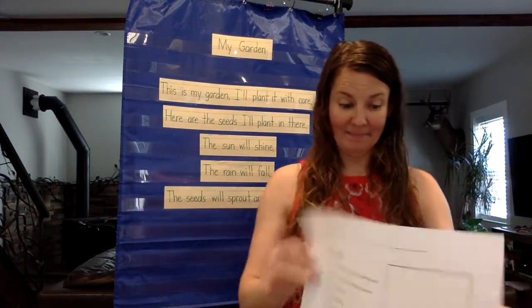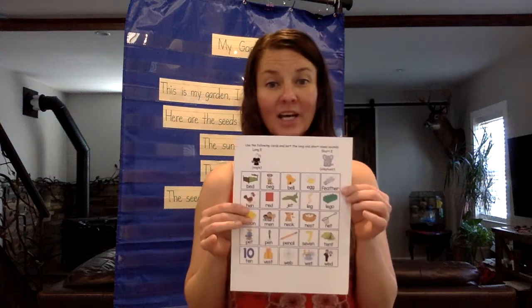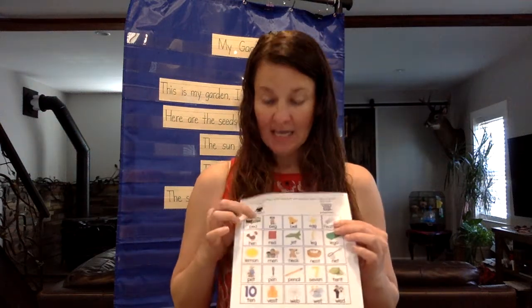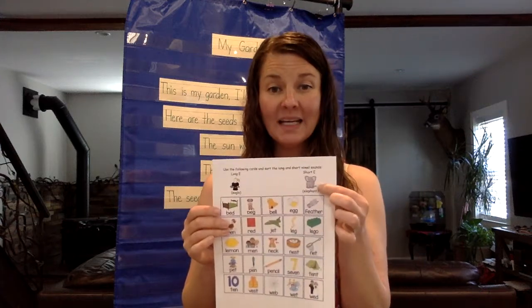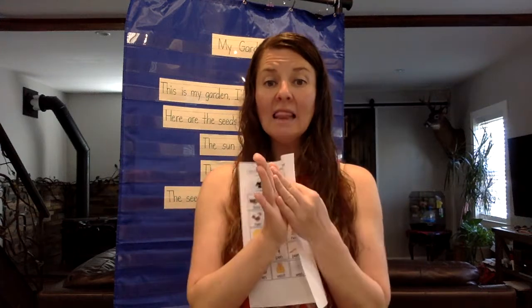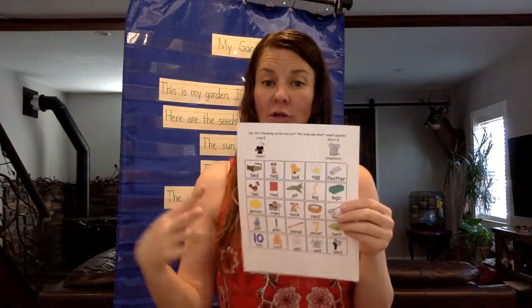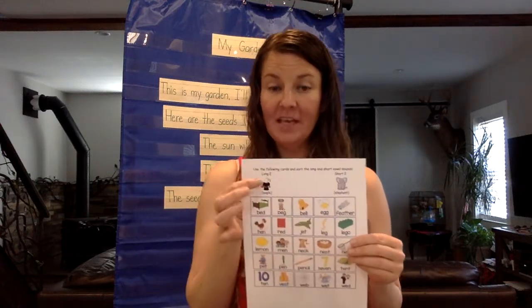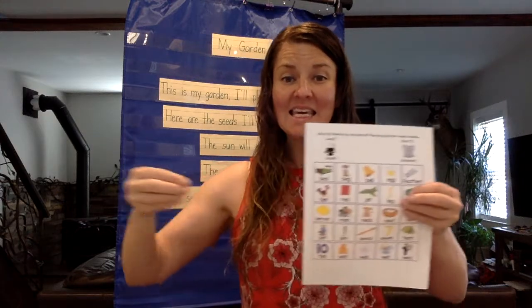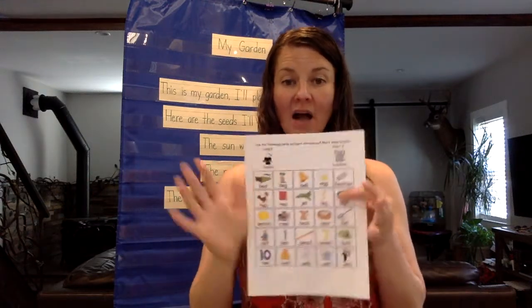This is going to be your reading time. Our word work — we are working on the long E, like eagle, or the short E, like elephant. You're going to cut out all the pictures and then sort them. If you hear a long E, you'll put them on one side. If you hear a short E, you'll put them on the other side.